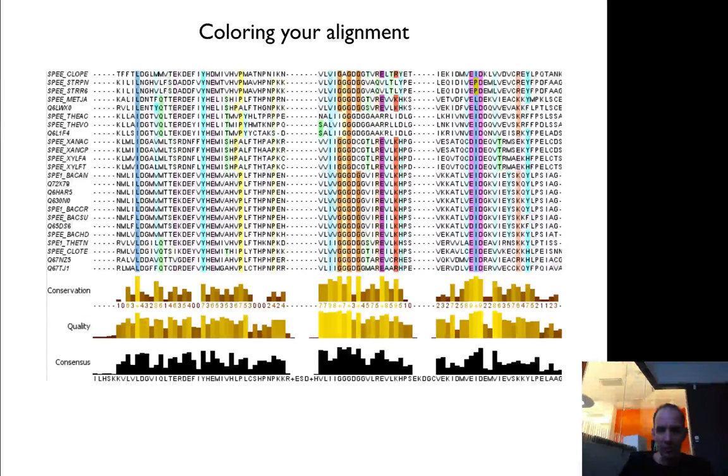So here, for instance, you find that you have a conserved glycine. Here in the middle, you have a glycine conserved, indicating that it's probably a loop, while you have some conserved polar residues that might indicate that it's a beta sheet to the right.